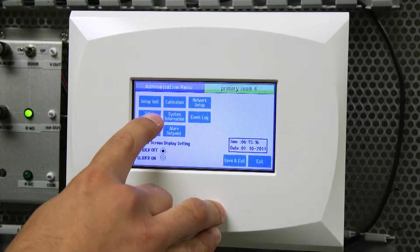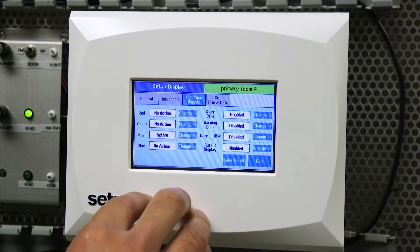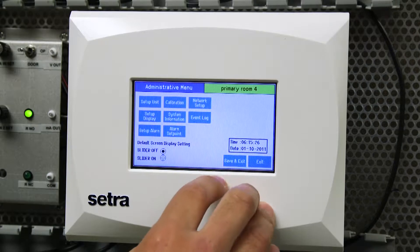Lastly we'll go to setup display, move to condition banner and set active mode to be green and standby to be blue. Hit save and exit, save and exit.